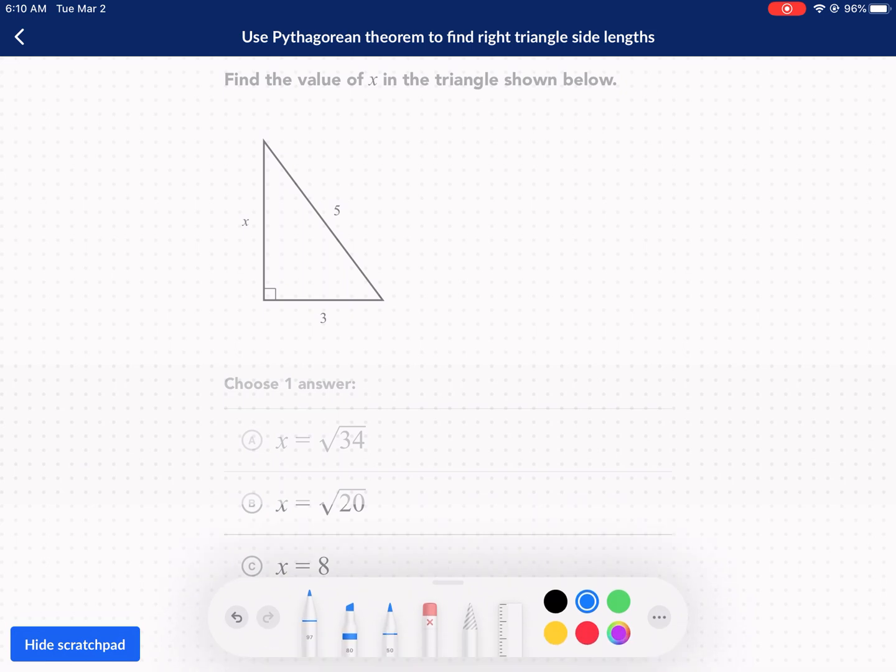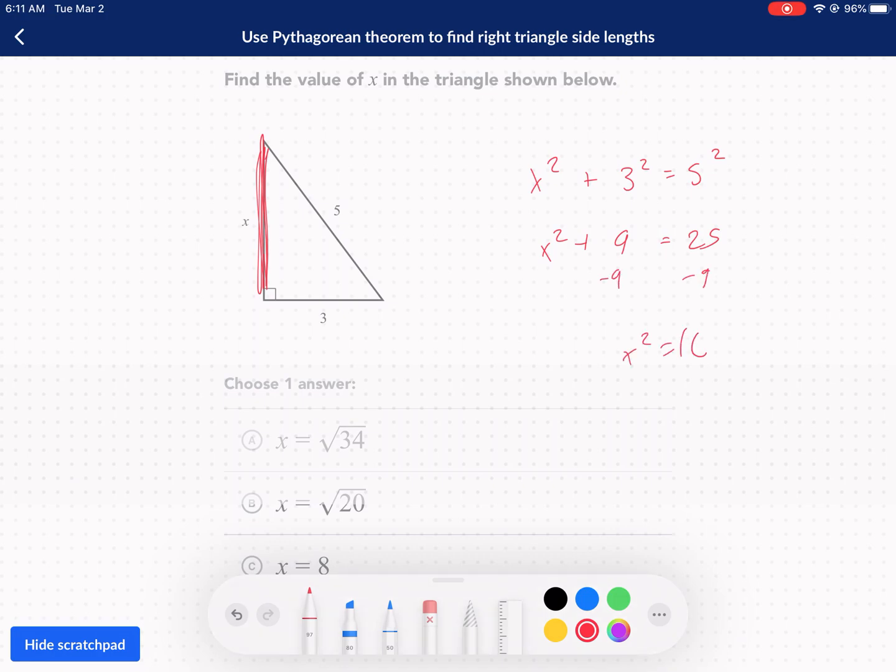This time we're looking for a leg. We're given the hypotenuse. This one's actually an automatic triangle. So this is x squared plus 3 squared equals 5 squared. This is an automatic triangle because it's an integer. When we get a value for x squared, so we subtract 9, subtract 9, we get x squared equals 16, perfect square, and we're going to get 4 for an answer.